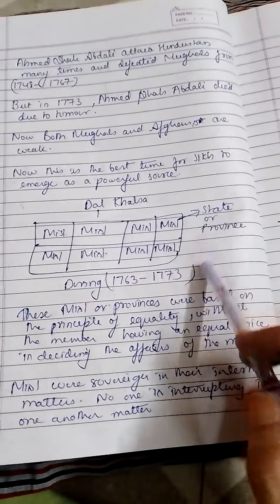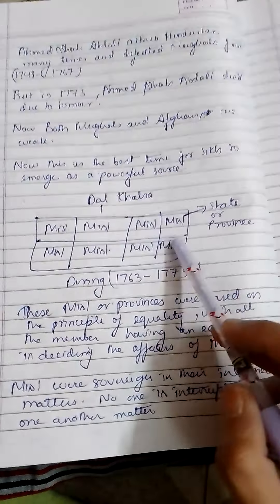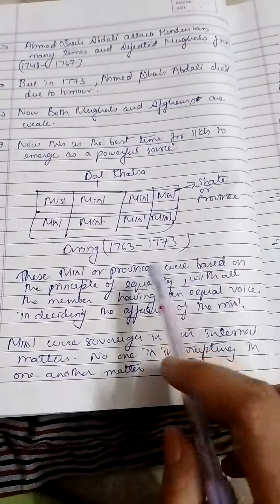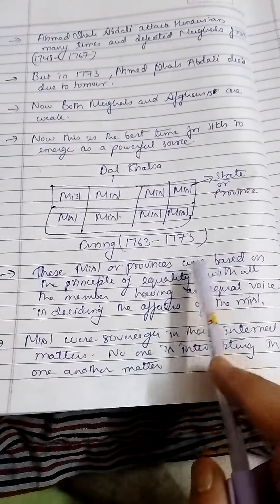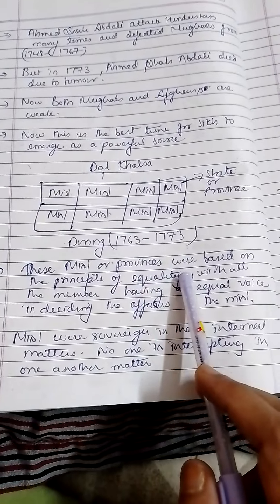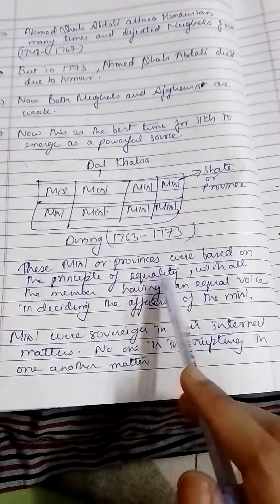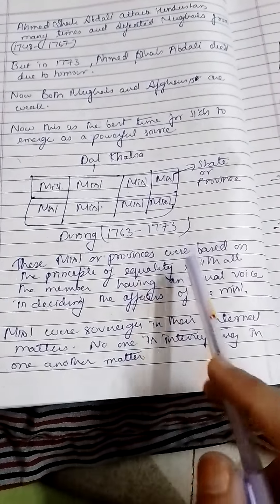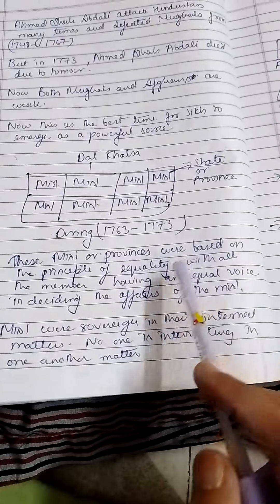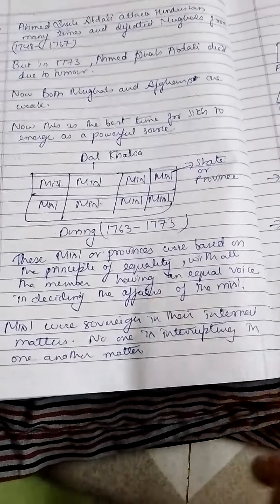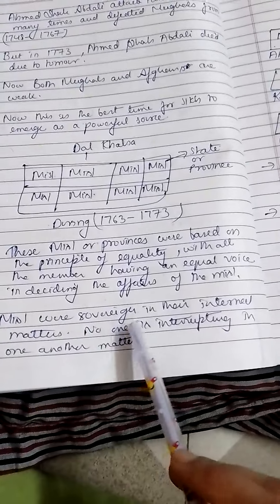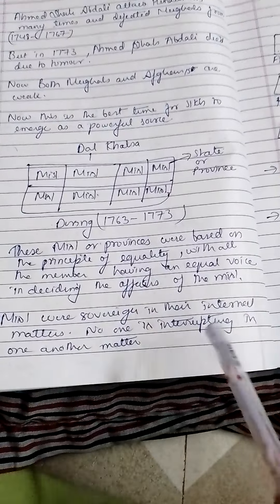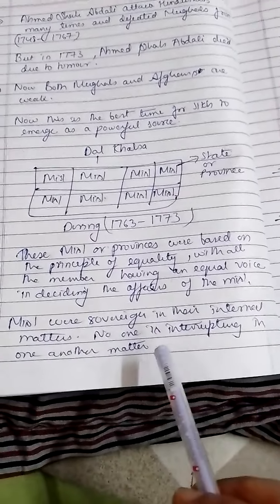The Sikhs took control of many provinces and states, forming what are called Misls, from 1763 to 1773. Within the Misl system, the principle of equality was followed — everyone had equal rights. The Misl provinces were independent and did not interfere in each other's internal matters. The next topic will be Punjab under Maharaja Ranjit Singh.